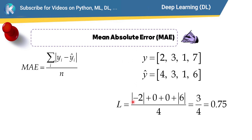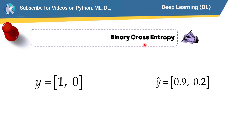In this example, it is the absolute value of −2, plus 0, plus 0, plus the absolute value of 1, all divided by 4, which equals 0.75.